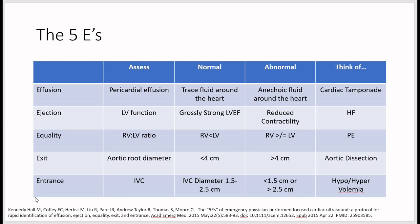For entrance, assess blood entering the heart by measuring the IVC diameter, which normally is 1.5 to 2.5 cm. Below 1.5 cm suggests hypovolemia; above 2.5 cm suggests hypervolemia. Remember to also perform the sniff test and assess IVC collapsibility to help determine overall volume status.